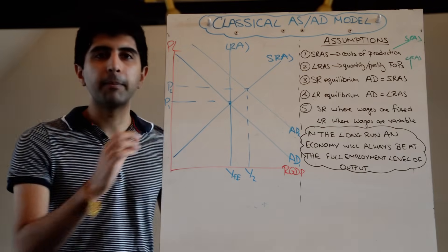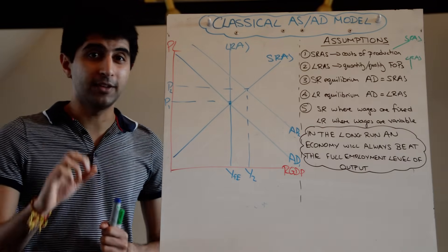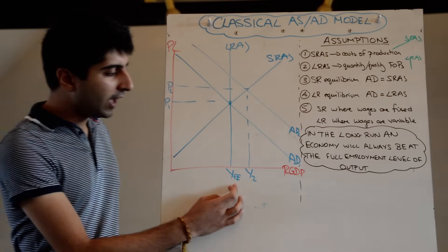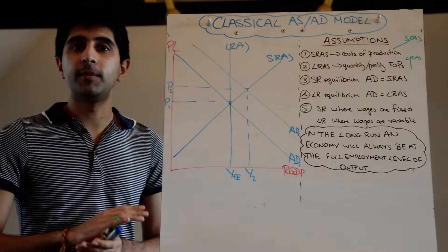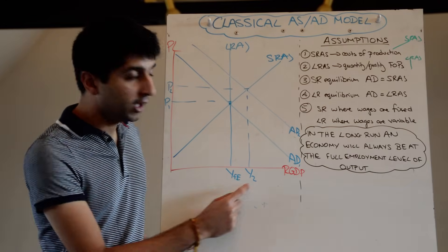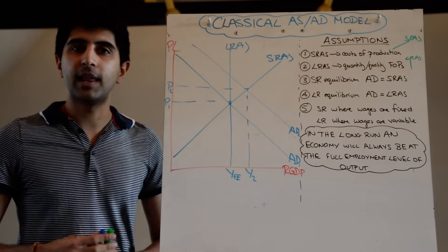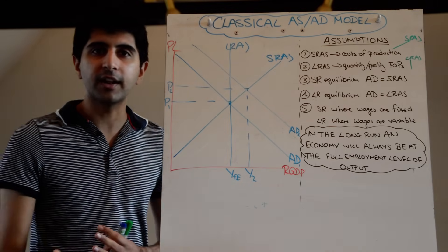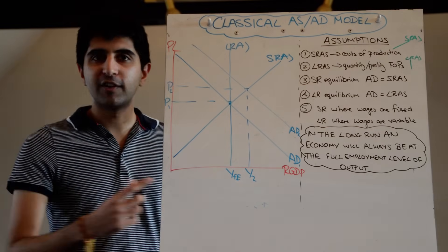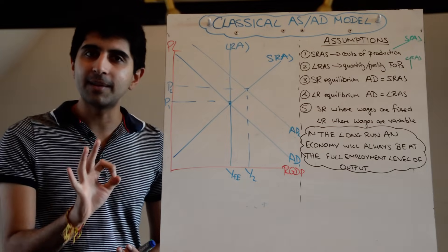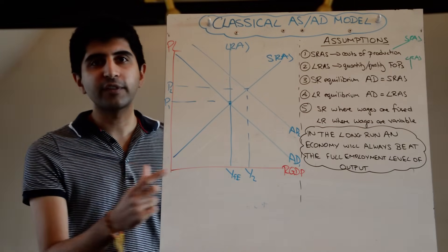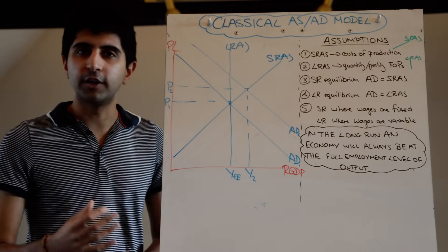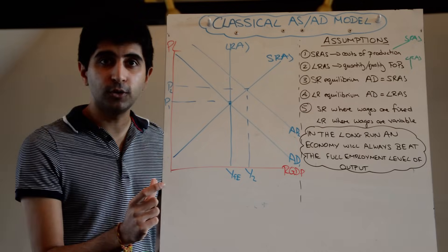How can output exceed full employment? Remember, at full employment the unemployment rate is not 0% — there is still frictional, structural, and seasonal unemployment, perhaps around 5% in advanced economies. So it is possible to employ some of those people and produce more than the full employment level. Alternatively, existing workers can work overtime — unsustainably using factors of production beyond their normal capacity, such as working 12-hour days instead of 9-hour days.